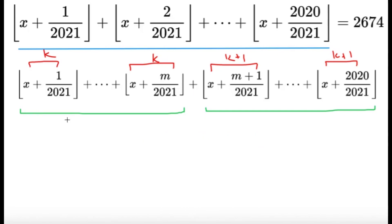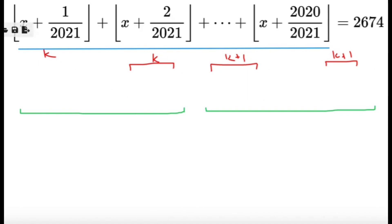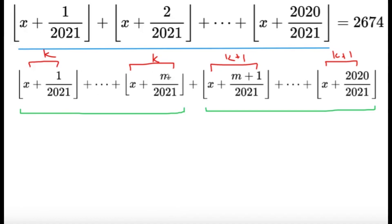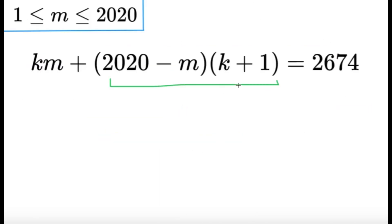So now it's just a matter of writing this in terms of K and M. So let's talk about the left part. Here I have m terms because I started from one over 2021 and I did it until m over 2021. So that's going to be a total of m terms. Each of them has a floor function of K, so that's km. Then now plus. Now we can just do complementary counting. There are 2020 terms in total and there are m terms in this part, so there's going to be a total of 2020 minus m terms here. All of them has a floor function of K plus one. And this is the sum, and this is apparently equal to 2674. So this sum over here, we just have to evaluate this one. And this will now be a diophantine equation in terms of K and M.